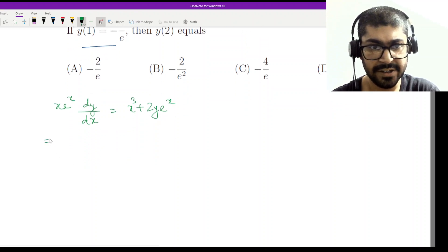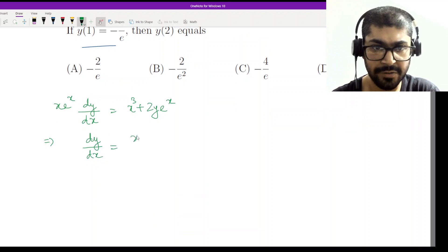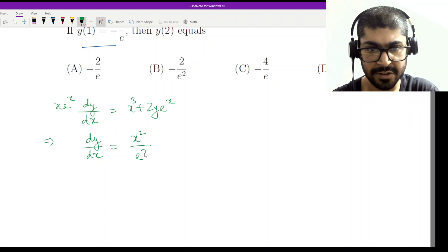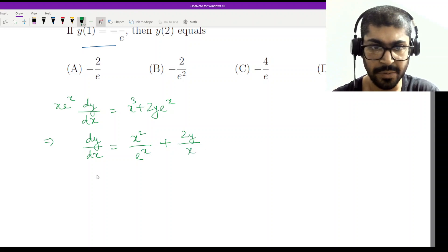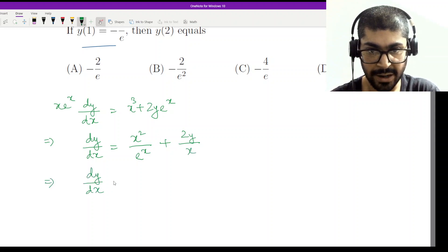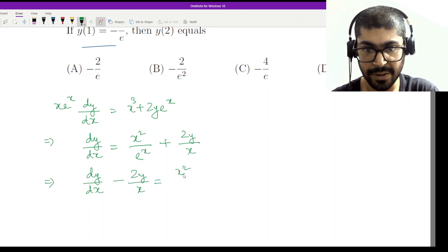I complete the division and I have dy/dx. This is equal to x²/e^x at the numerator and e^x will be in the denominator. And here e^x will cancel and I have 2y/x. So dy/dx - 2y/x = x²/e^x.